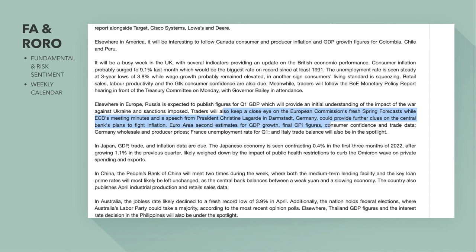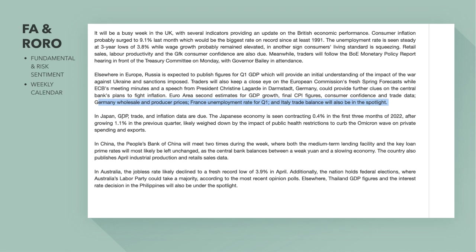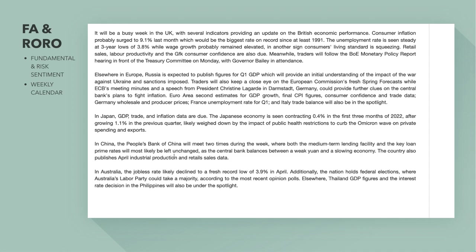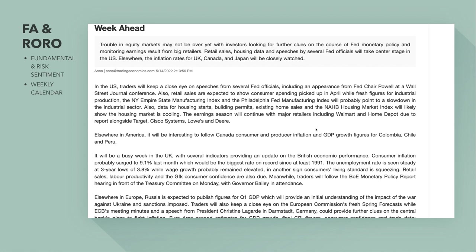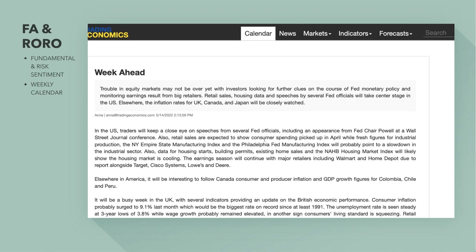The euro area second estimate for GDP growth, final CPI figures, consumer confidence and trade data are all important. Germany will release producer prices, France the unemployment rate for Q1, and Italy trade balance. Japan GDP and inflation data are due — the Japanese economy is seen contracting 0.4% in Q1 2022 after growing 1.1% in the prior quarter, weighed down by Omicron restrictions on private spending and exports.